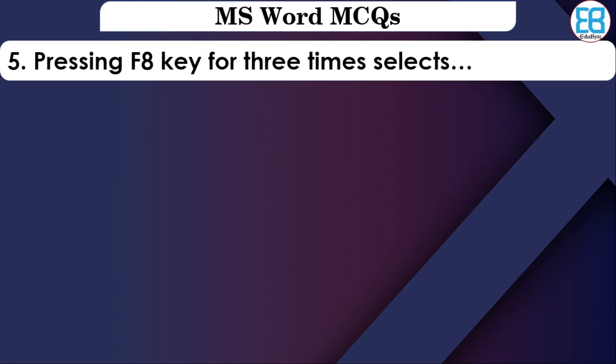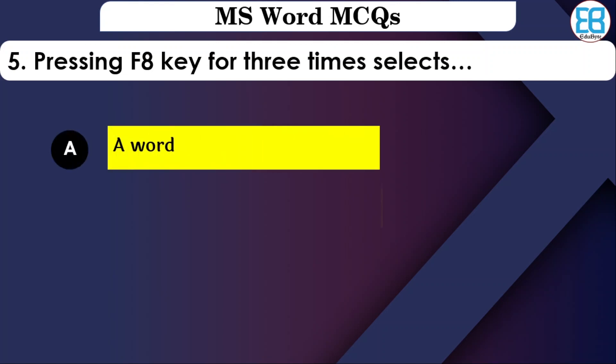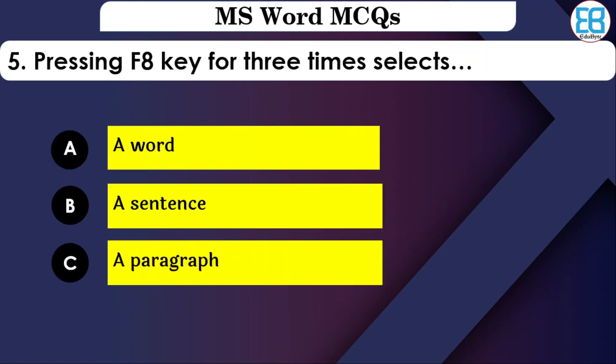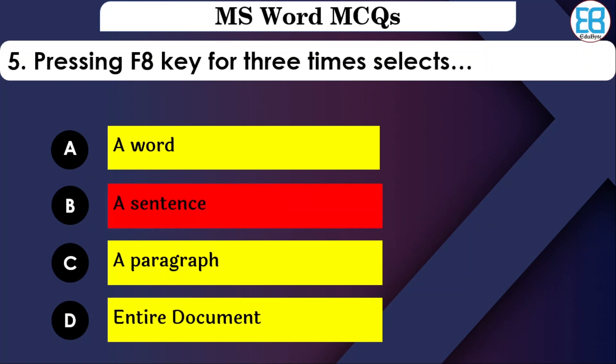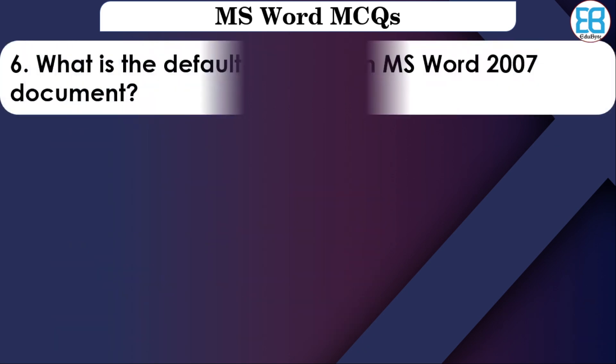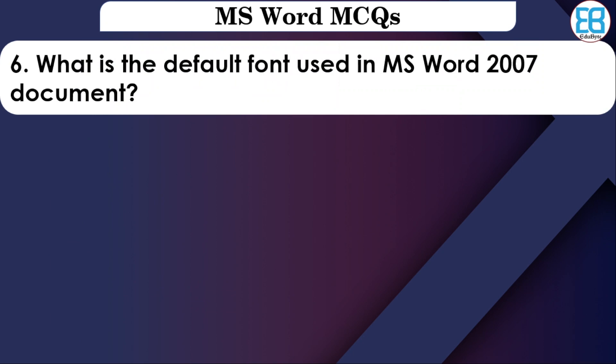Pressing F8 key three times selects what? Pressing F8 three times will select a sentence, a paragraph, or the entire document. The correct option is sentence — pressing F8 three times selects a sentence.